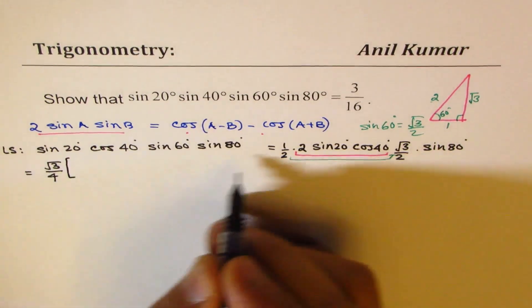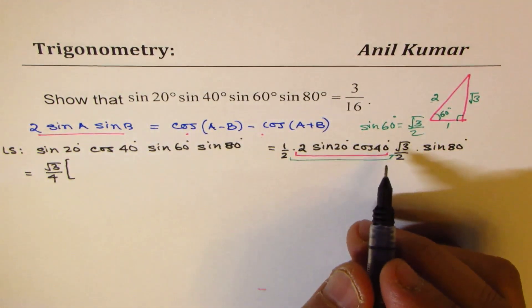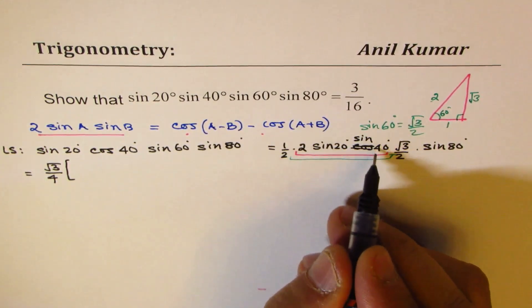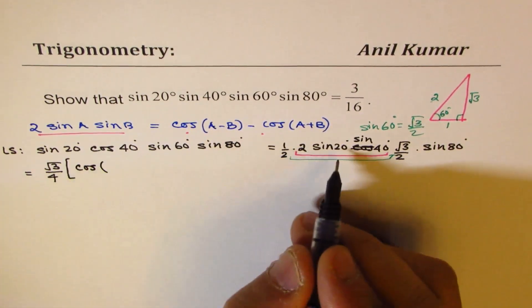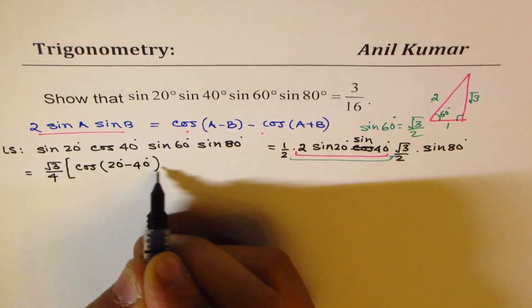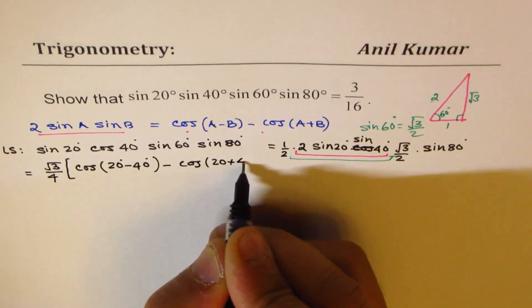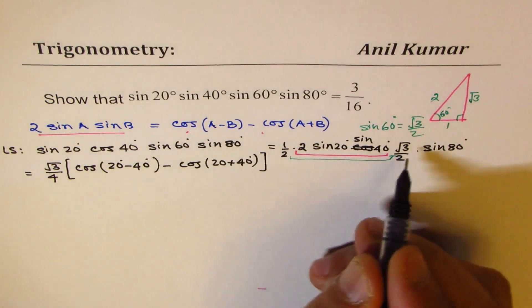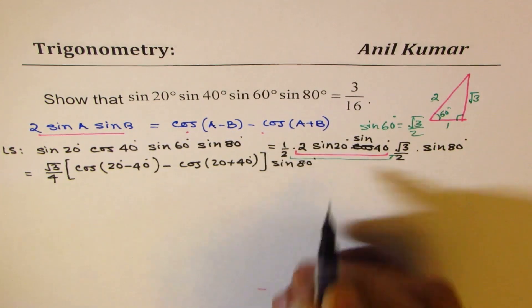So I'll write here, 2 sin 20 cos 40°. I'm sorry, I wrote cos. This is sine. 2 sin 20°, sin 40° as cos(A - B), which is 20 - 40°, minus cos(20 + 40°). So this is that part. We have taken care of this. And we have left with sin 80°.